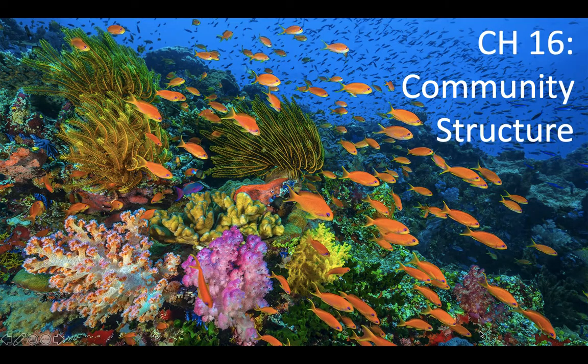It was really cool to see hieroglyphs about Egyptian beekeeping when we were there. Anyway, let's get to it. Let's talk about community structure. Look at this beautiful picture of a coral reef. In today's lecture we're going to talk about how to measure species diversity in communities, and also about the three-dimensional structure of communities.